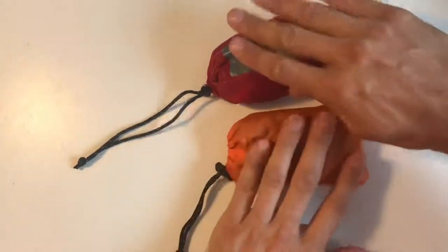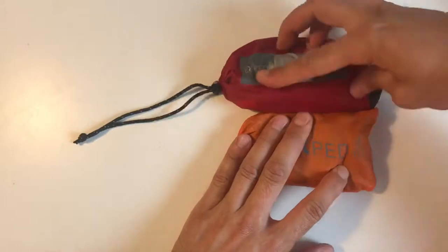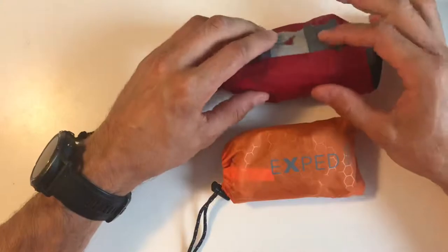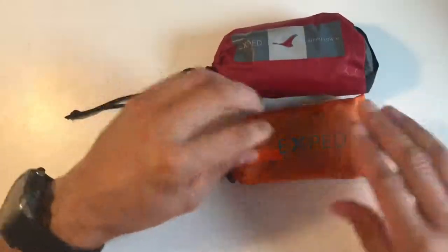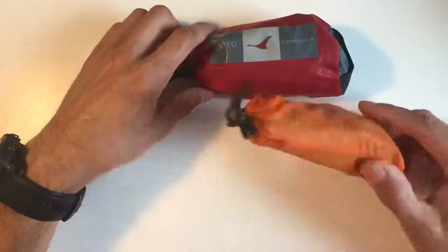So you know, if you put them next to each other, it does pack down much smaller. This one has got two valves on it which, because of the valve, takes some more space. It's just got one valve, it's a smaller pack, it's thinner and it weighs less.